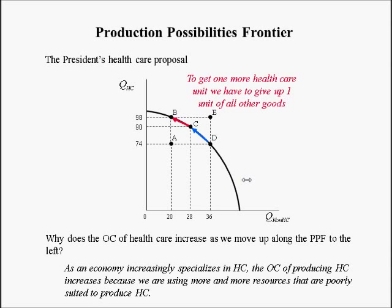The more bowed out the curve, the more different the two goods are. If you put pizza on one axis and televisions on the other, the resources needed to produce those two goods are vastly different, so the PPF is very bowed out. If instead you put cars on one axis and tanks on the other, the PPF would be more of a straight line, because the resources needed to make cars are very similar to those needed to make tanks. So, the more dissimilar the two goods, the more bowed out the PPF, because opportunity costs rise more quickly.